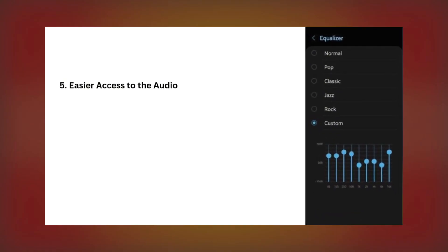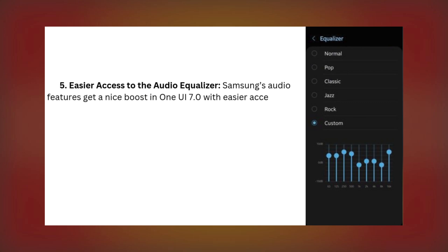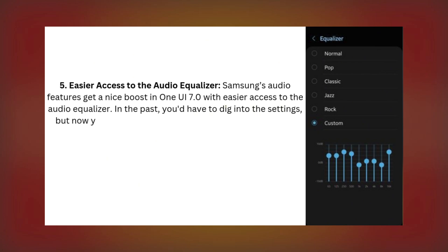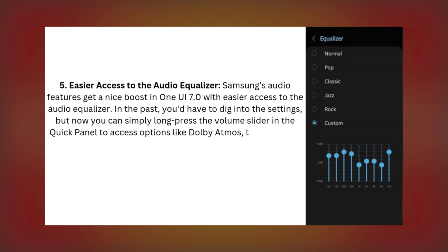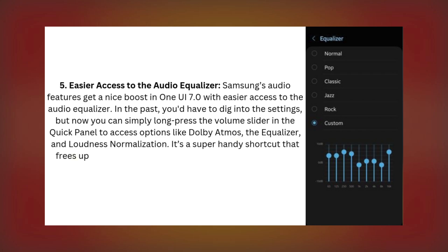Number 5: Easier Access to the Audio Equalizer. Samsung has made audio settings more accessible in One UI 7.0. Now you can simply long-press the volume slider in the quick panel to access advanced options like Dolby Atmos, the equalizer, and loudness normalization. It's a super convenient shortcut that keeps the quick panel clean while still giving you quick access to your audio settings. Audio fans, rejoice!